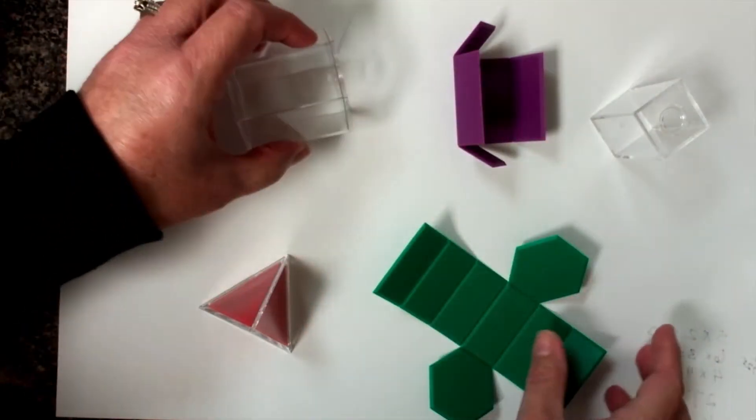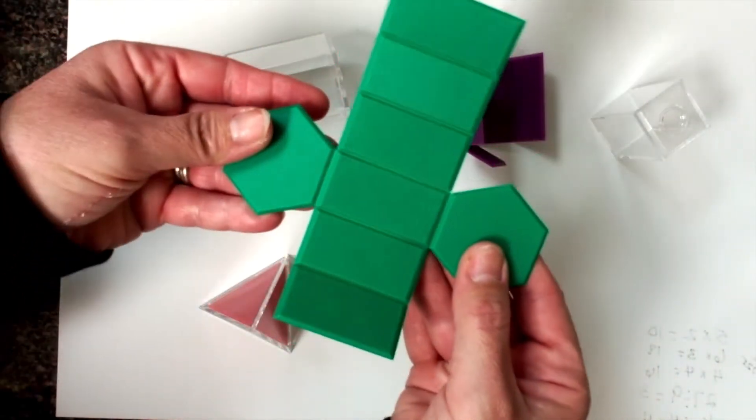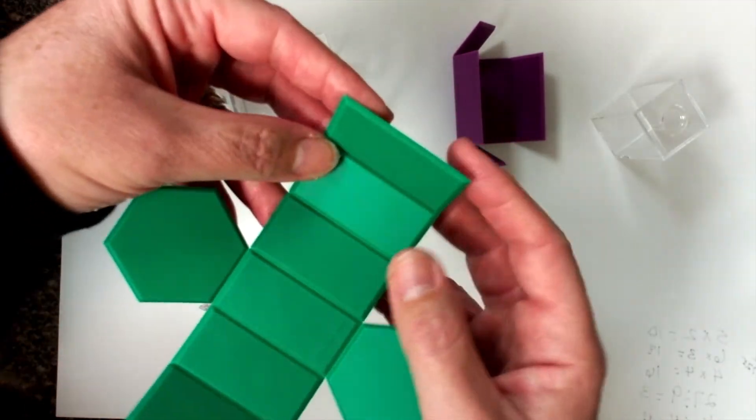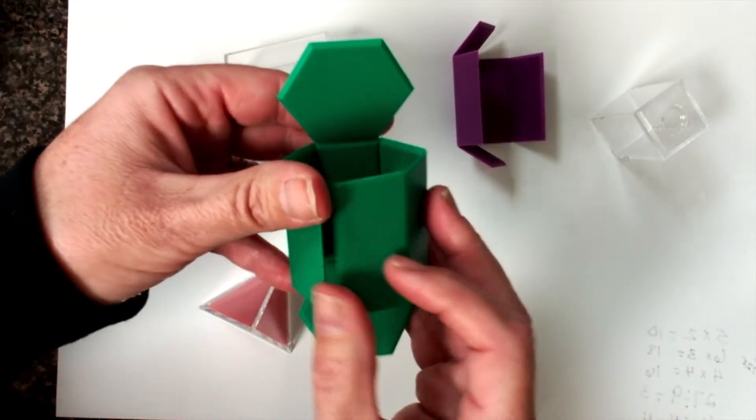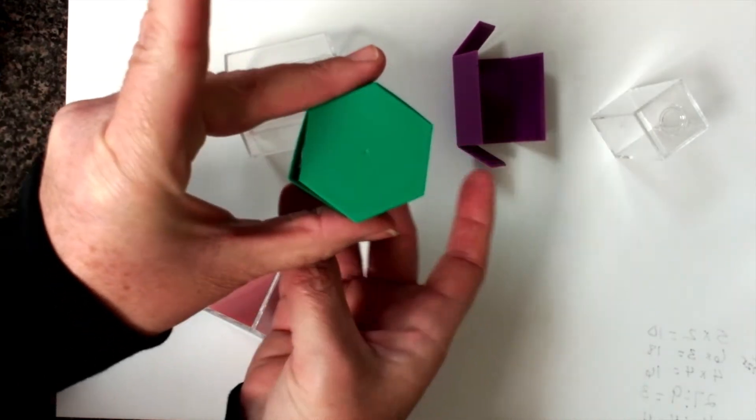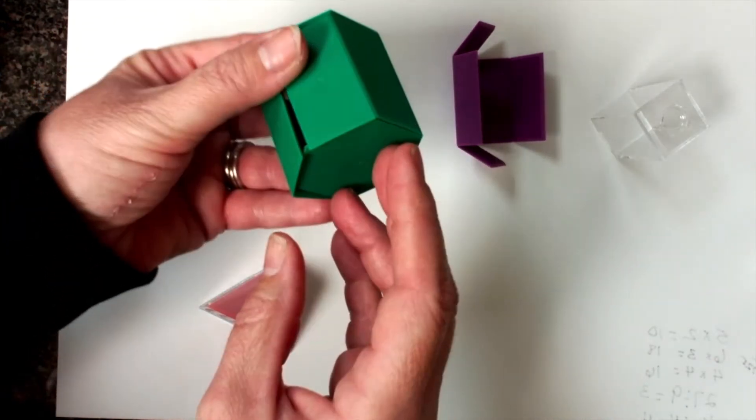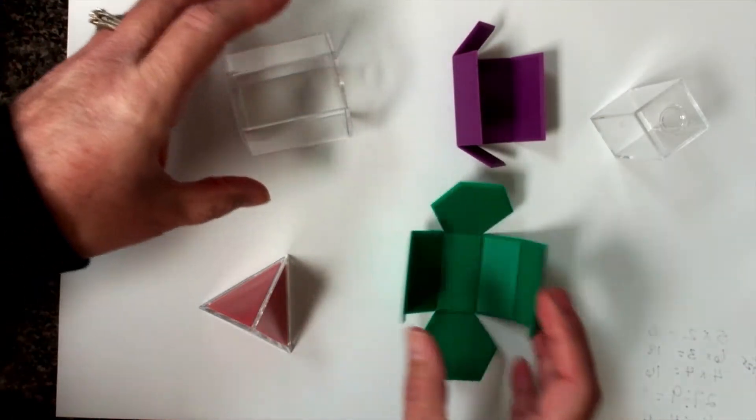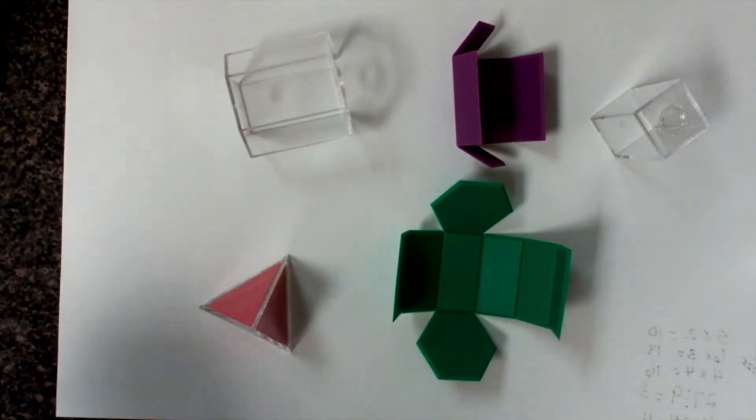This one is our hexagonal prism and we can talk about how the hexagonal prism is actually made up of one, two, three, four, five, six rectangles because it's a hexagon. It has six sides and the top and the bottom is a hexagon, but these are actually rectangles. So it has six rectangles and then the hexagon sits on the top and the bottom. That's how we know it's a hexagonal prism.